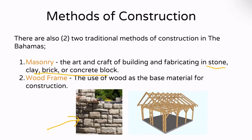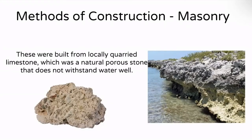Wood framing is the use of wood as a base material for construction, which we can see in the picture to the bottom right. We're going to look at each of these in detail, starting first with masonry. The reason masonry was popular in the Bahamas is because our islands are made up of limestone rock, and so buildings were initially built from this limestone rock.